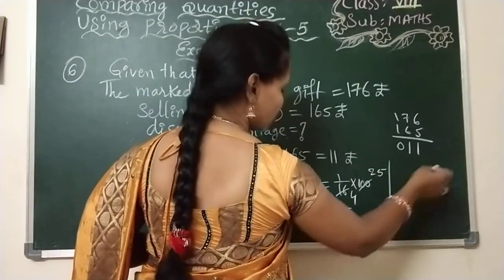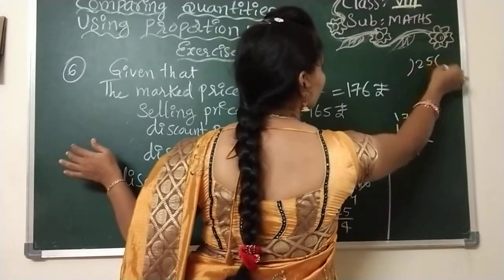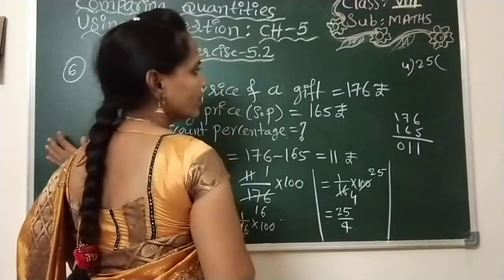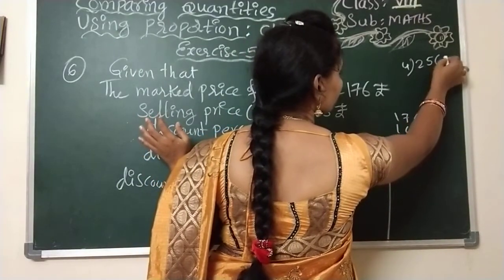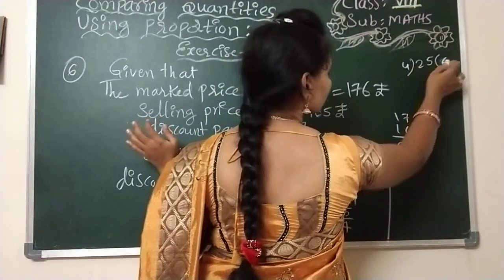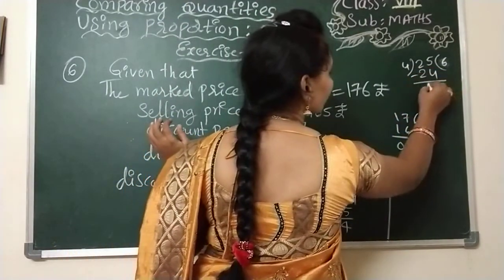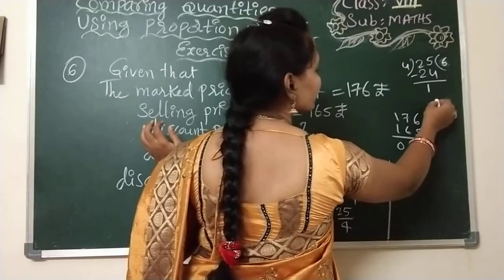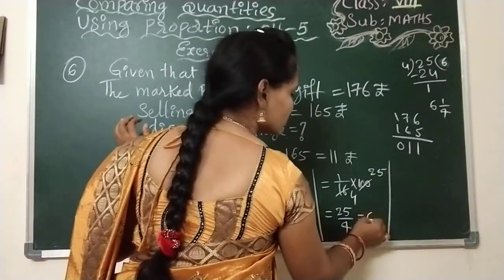Now you have to do the division. 4 into 25: 4 sixes are 24, and 1 is the remainder. So we can write in mixed fraction: 6 and 1 by 4. So here, 6 and 1 by 4 percent.